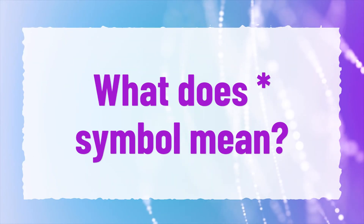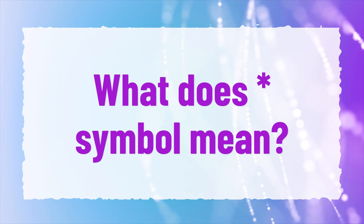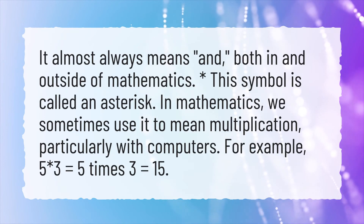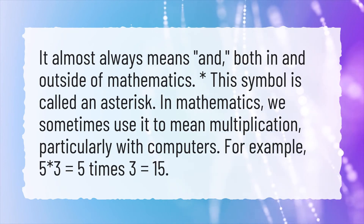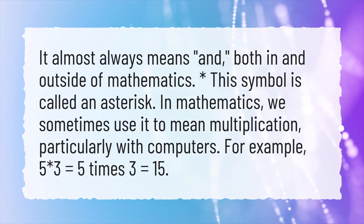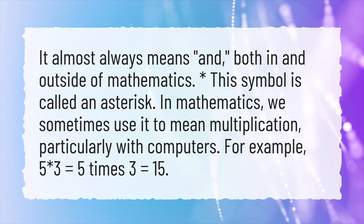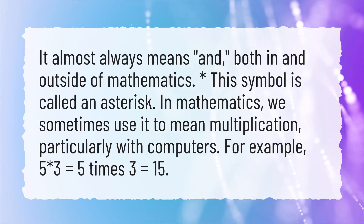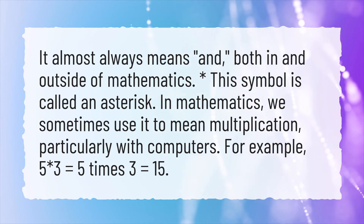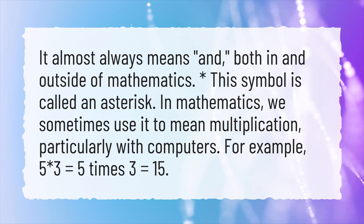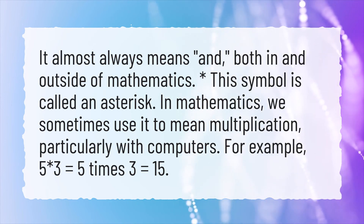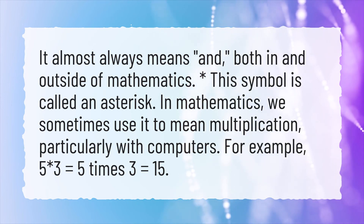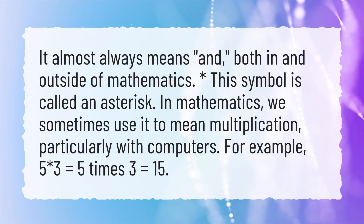What does the asterisk symbol mean? It almost always means 'and', both in and outside of mathematics. This symbol is called an asterisk. In mathematics, we sometimes use it to mean multiplication, particularly with computers. For example, 5 asterisk 3 equals 5 times 3 equals 15.